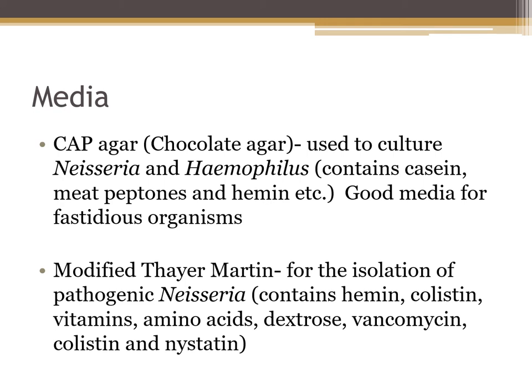We can also use modified Thayer-Martin, which will suppress non-Neisseria pathogens and other organisms but will grow out the Neisseria pathogens like Neisseria gonorrhoeae and Neisseria meningitidis. The best way to isolate Neisseria pathogens is to put our sample on a chocolate agar and a modified Thayer-Martin. Modified Thayer-Martin is enriched and selective, and we want to put those plates in CO2 at 35 degrees with increased humidity.